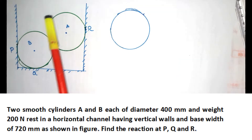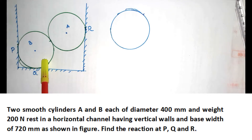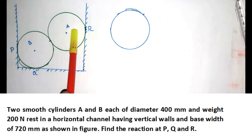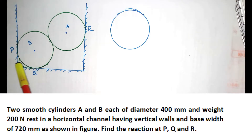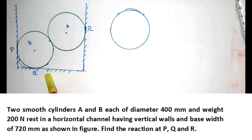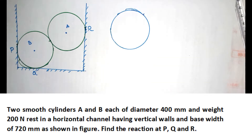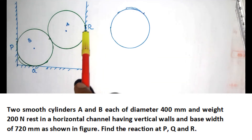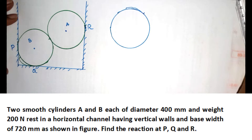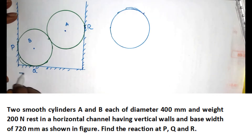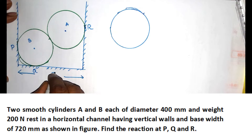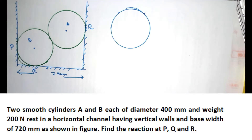The diameter is 400 mm, the weight is 200 N. The base width is 720 mm. The second cylinder has a diameter of 300 mm and weight 400 N — that means it is 400 N.